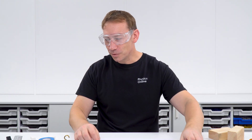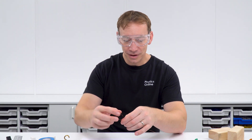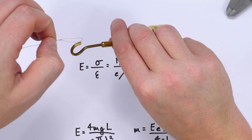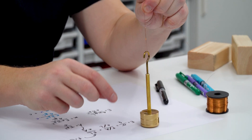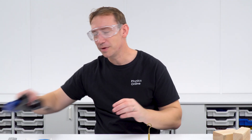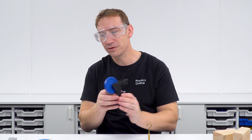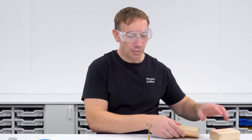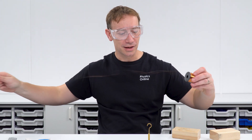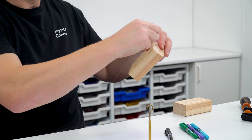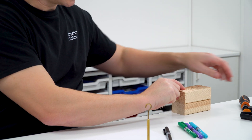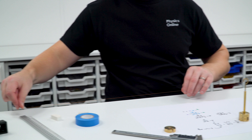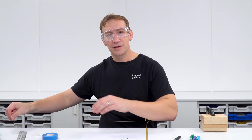I've tied a small loop in the end of the wire so we can hang a mass hanger from it and load it up. To keep the wire hanging vertically I'm using a pulley over the edge of the bench, and to attach the other end I'm using two blocks of wood. Wrap the wire around the wooden block a couple of times, clamp it to the edge of the desk, and now we have our horizontal wire ready to load up.